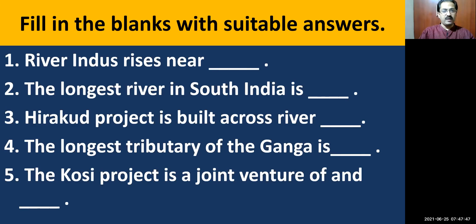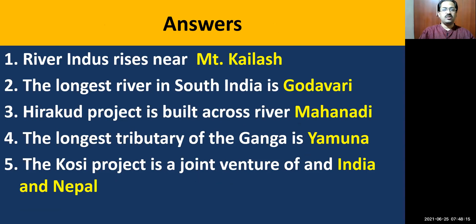Now for the fill-in-the-blanks section: River Indus rises near Mount Kailash. The longest river in South India is Godavari. Hirakud project is built across River Mahanadi. The longest tributary of Ganga is Yamuna. The Kosi project is a joint venture of India and Nepal.